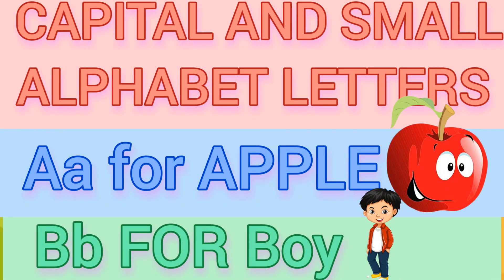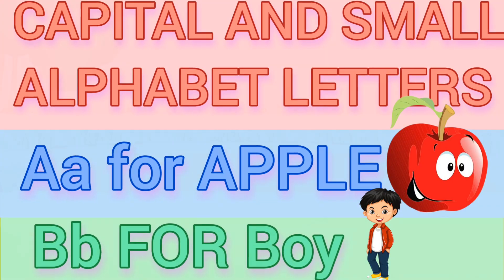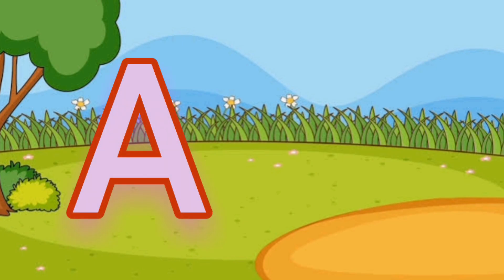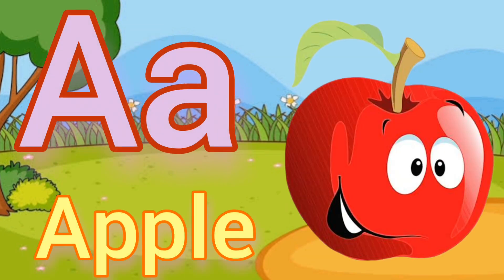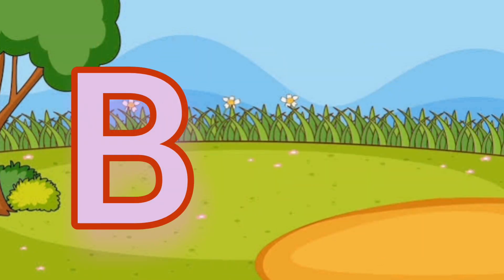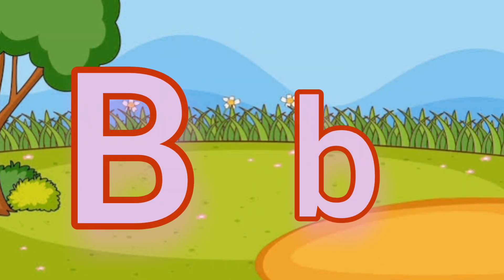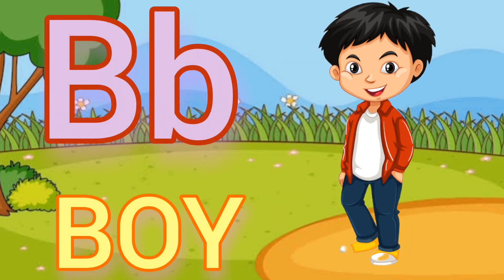Let's start alphabet letters. Capital A, small a. A for apple. Capital B, small b. B for boy.